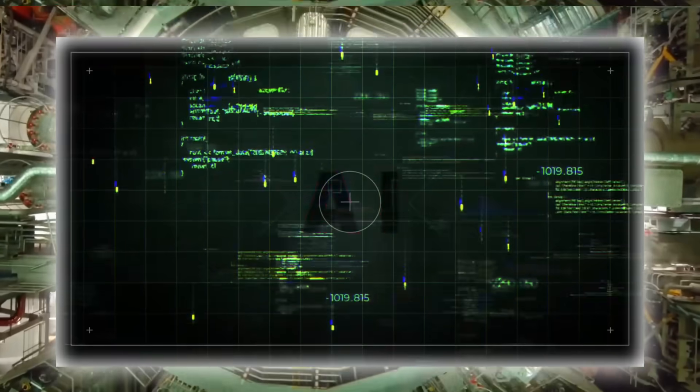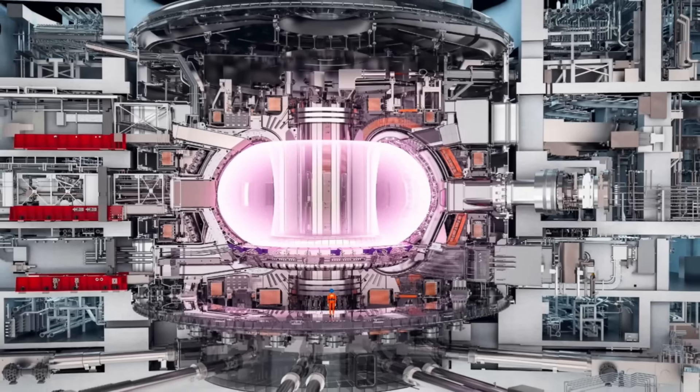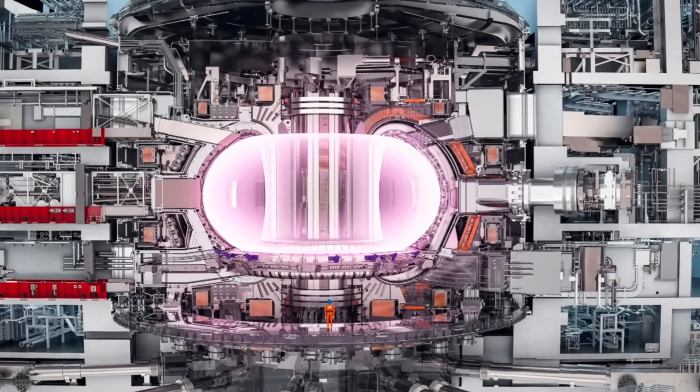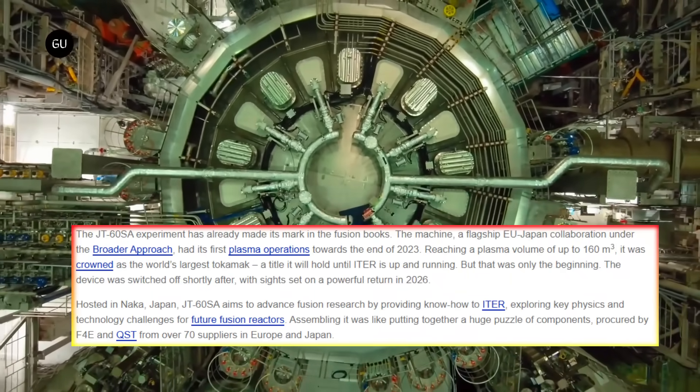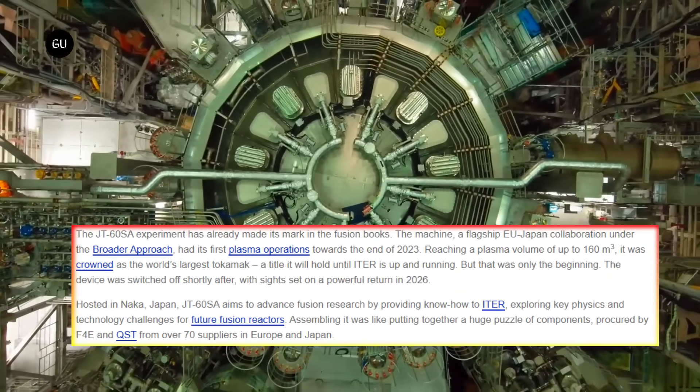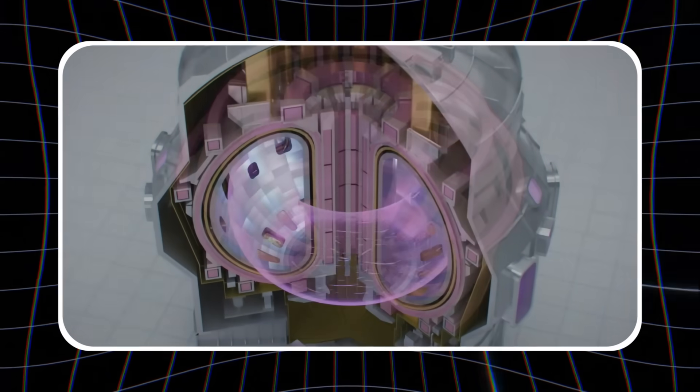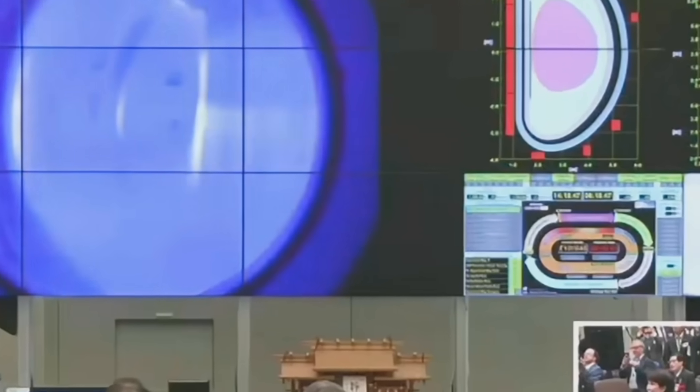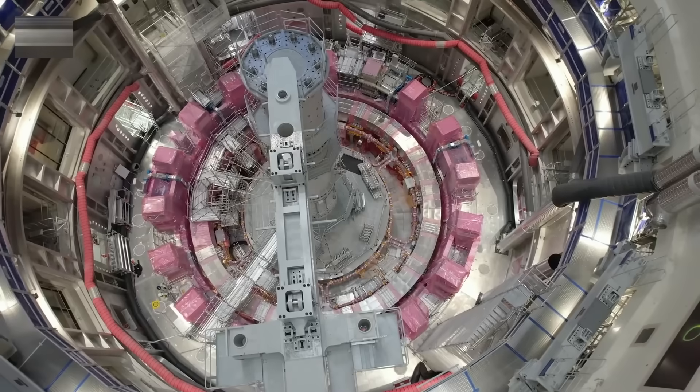To understand the significance of this shutdown, we need to look at where fusion stands today. ITER, the International Thermonuclear Experimental Reactor in France, represents humanity's biggest fusion bet. Designed to be ten times larger than any previous tokamak, it's now billions over budget and decades behind schedule. Originally planned to begin operations in 2016, ITER's first plasma has been delayed until at least 2025, with full power tests not expected until 2035.